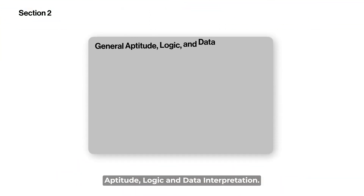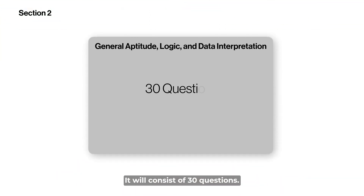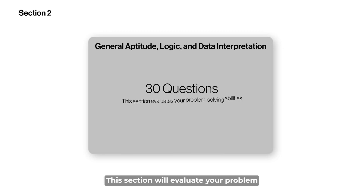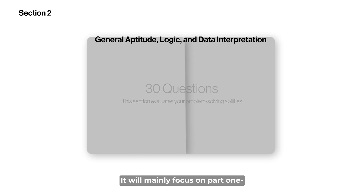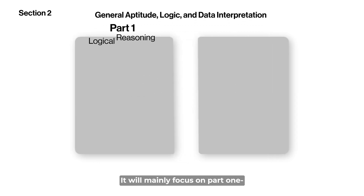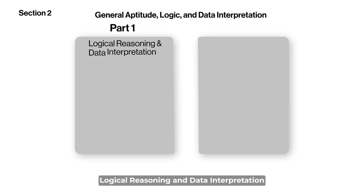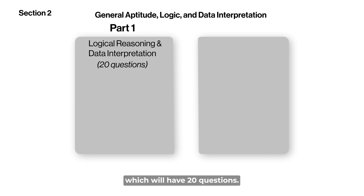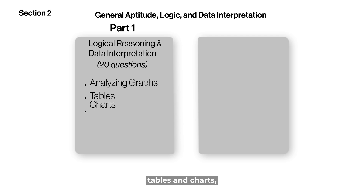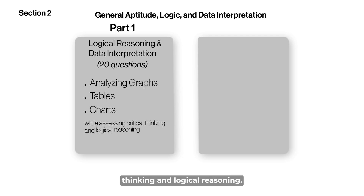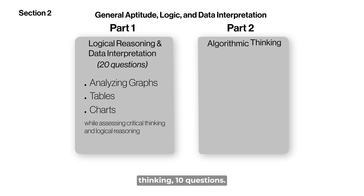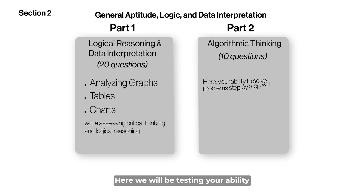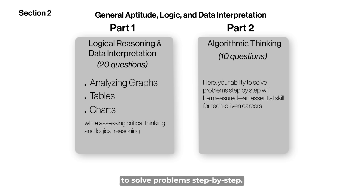The second section is General Aptitude, Logic, and Data Interpretation, consisting of 30 questions. This section evaluates your problem-solving abilities. Part 1 is Logical Reasoning and Data Interpretation with 20 questions, testing your skills in analyzing graphs, tables, and charts while assessing critical thinking. Part 2 is Algorithmic Thinking with 10 questions, testing your ability to solve problems step by step.